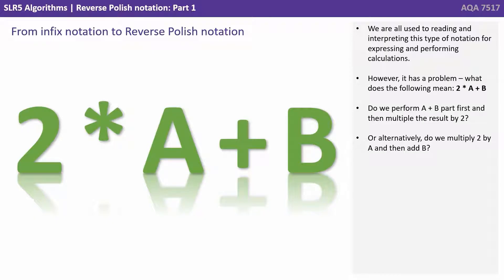We are all used to reading and interpreting this type of notation for expressing and performing calculations. However, it has a problem. What does the following expression mean? 2 times A plus B. Do we perform the A plus B part first and then multiply the result by 2? Alternatively, do we multiply 2 by A and then add B?